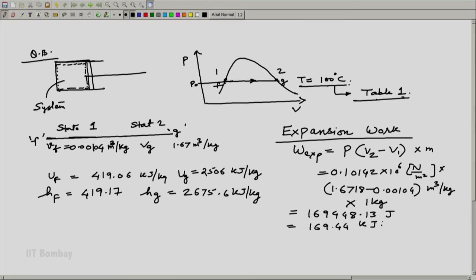This will give us expansion work which is equal to 169448.13 joules which is equal to 169.44 kilojoules. This is my expansion work, we have got different property values. This was one of the questions that was asked. The other question is what are delta U and what is delta H.